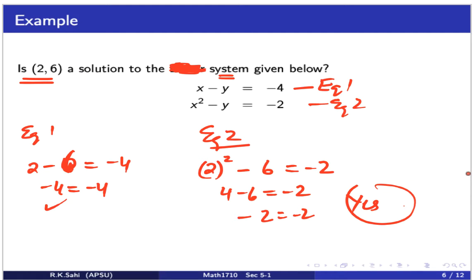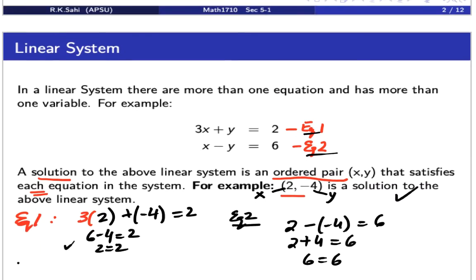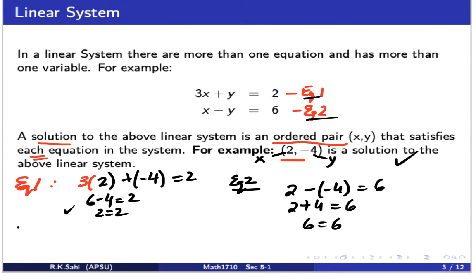We have learned whether an ordered pair is a solution to a system or to a linear system. When I say linear system, I mean all the variables have power 1. Now, we already knew (2, -4) was a solution to this linear system. We would actually like to find solutions on our own — that's where the substitution method comes in. So let's go ahead and solve this linear system using the substitution method.